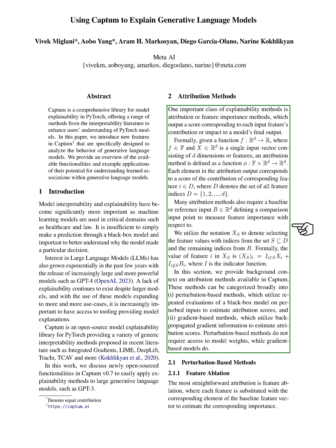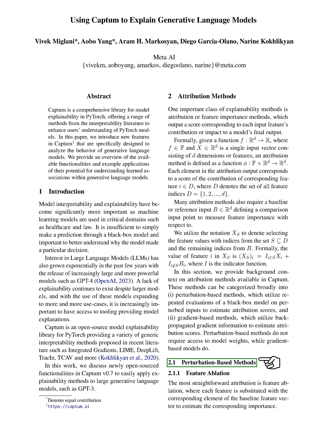Attribution methods in Captum can be broadly divided into two categories: perturbation-based methods, which estimate attribution scores by repeatedly evaluating a model on altered inputs, and gradient-based methods, which estimate attribution scores using backpropagated gradient information. Perturbation-based methods don't need access to model weights, but gradient-based methods do.